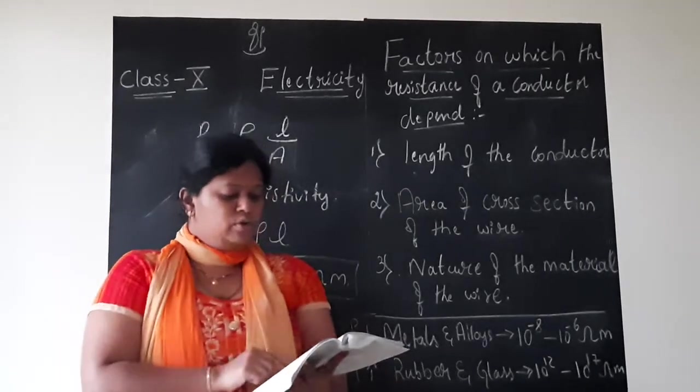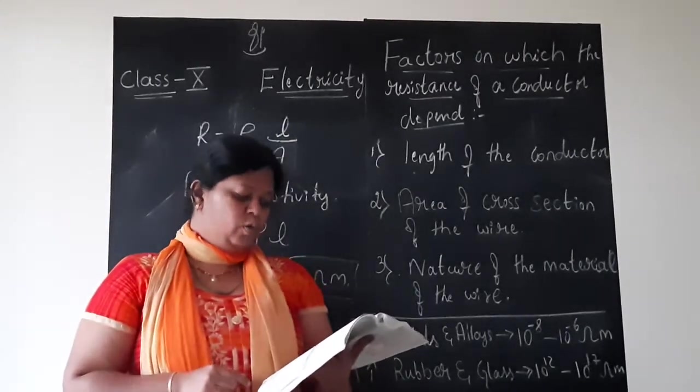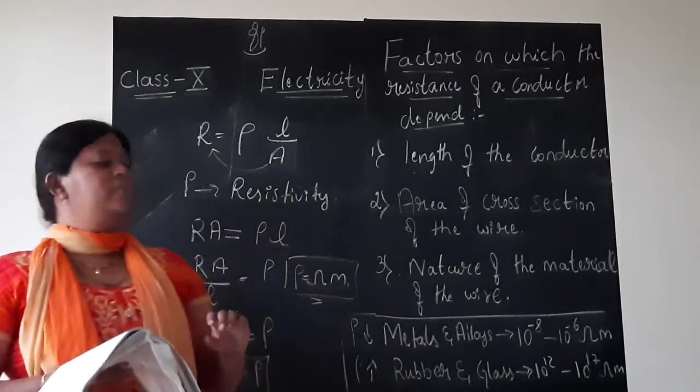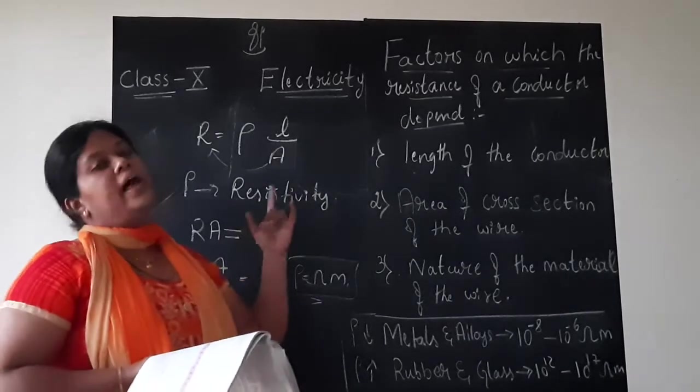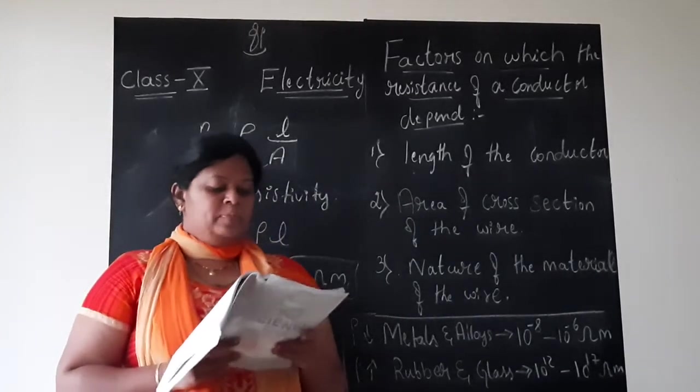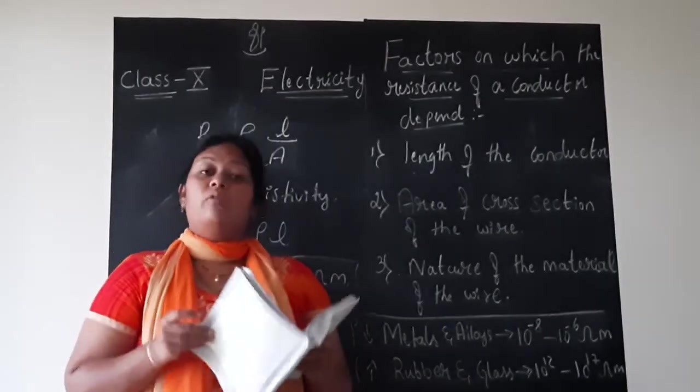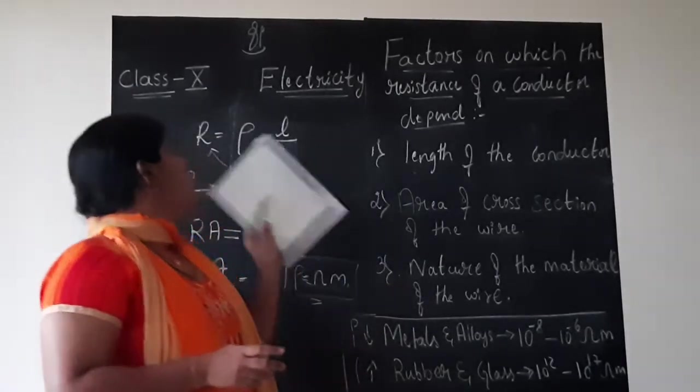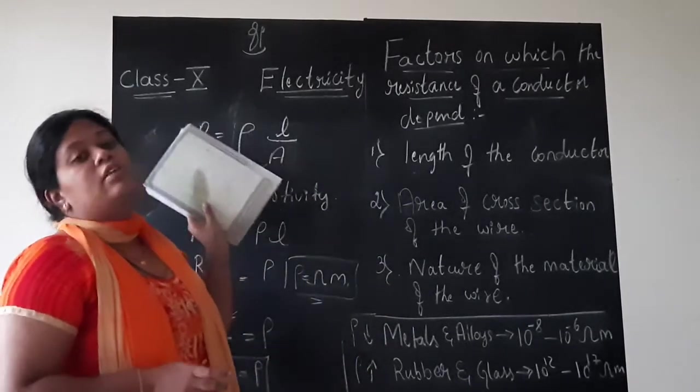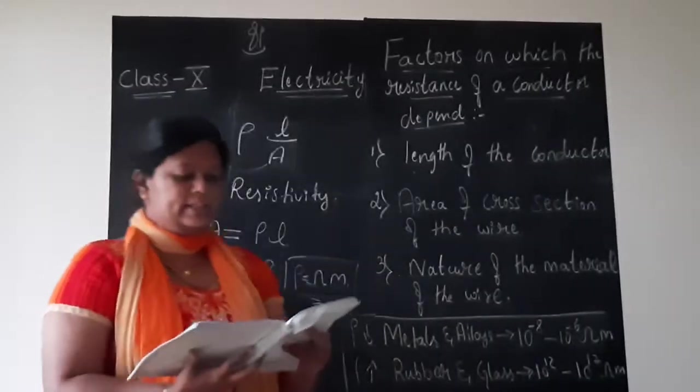Next, you have few numericals, example 12.3 to 12.6 which I will be solving on the board. It is mainly on the problems of Ohm's law and this resistivity R equals rho into L by A formula. Let us see how to solve. It is very easy problem children. Only thing is you should know to manipulate the formulas and don't forget to write the units. Now let us solve.